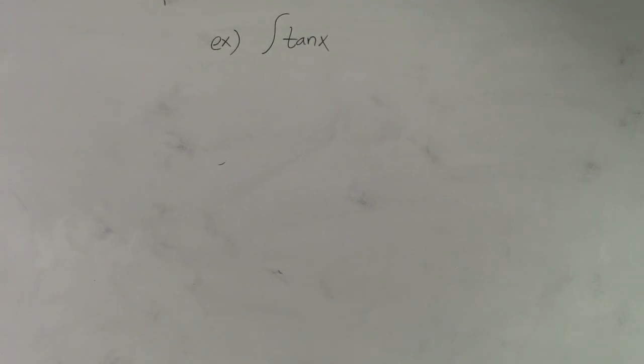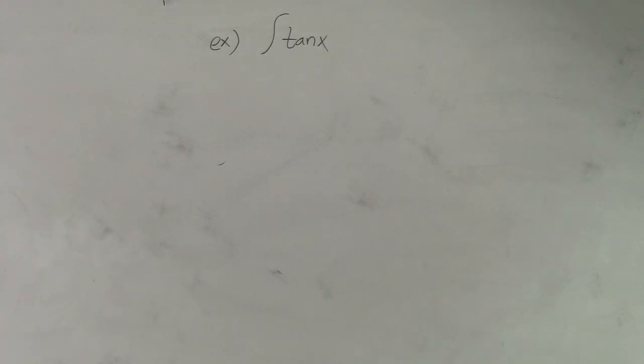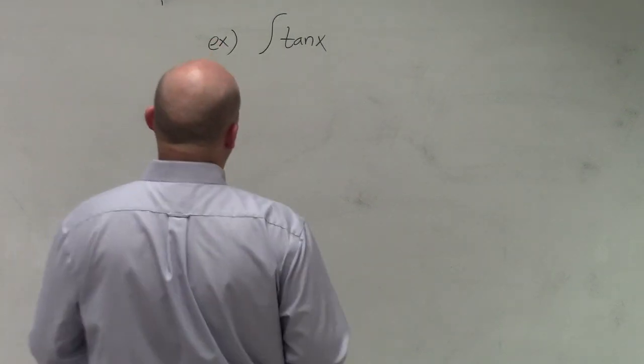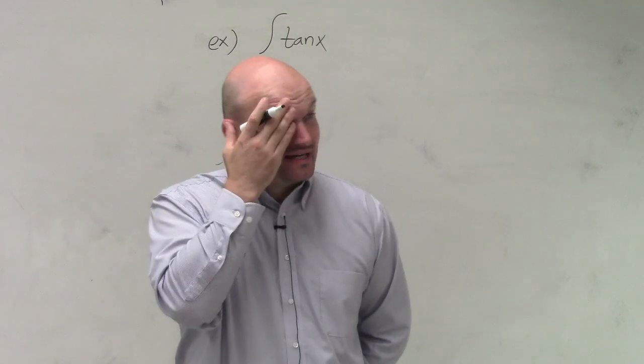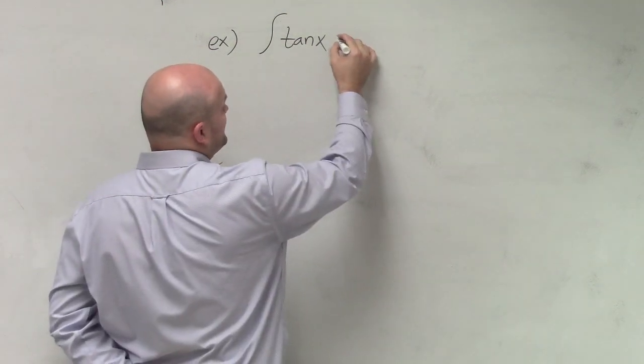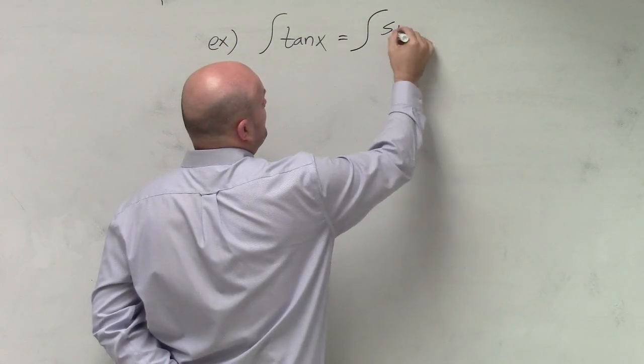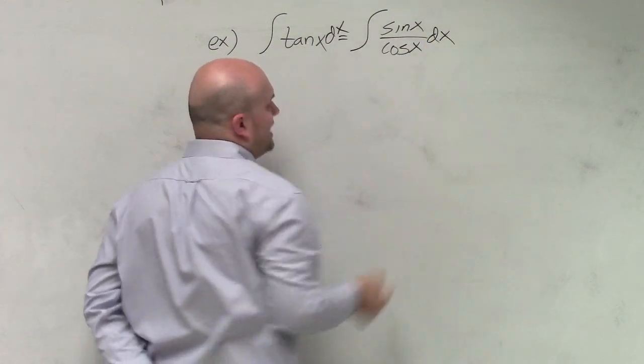Which I think you will like maybe a little bit better. So in this example, as of right now there's nothing we can do with the tangent of x. However, we can use the quotient identity to rewrite this as sine of x over cosine of x dx.